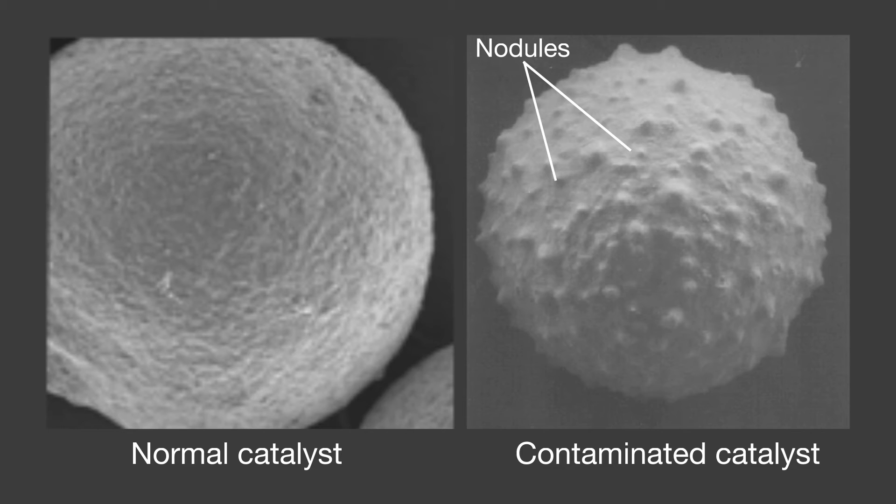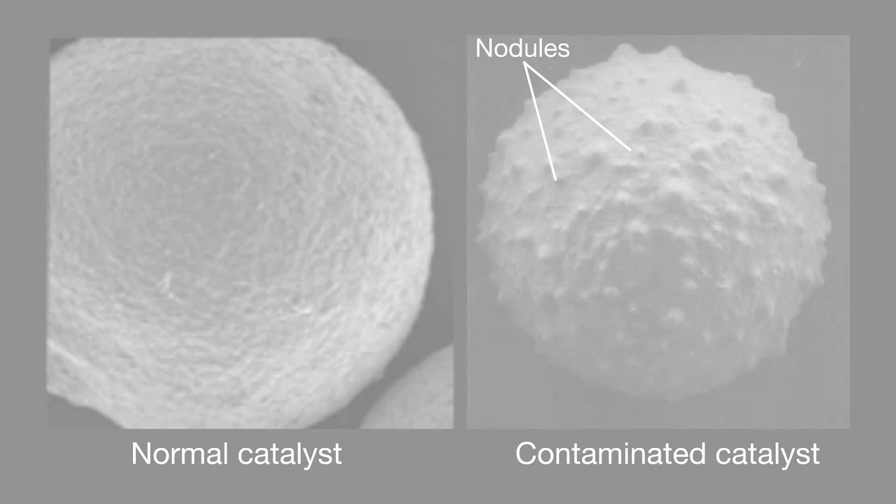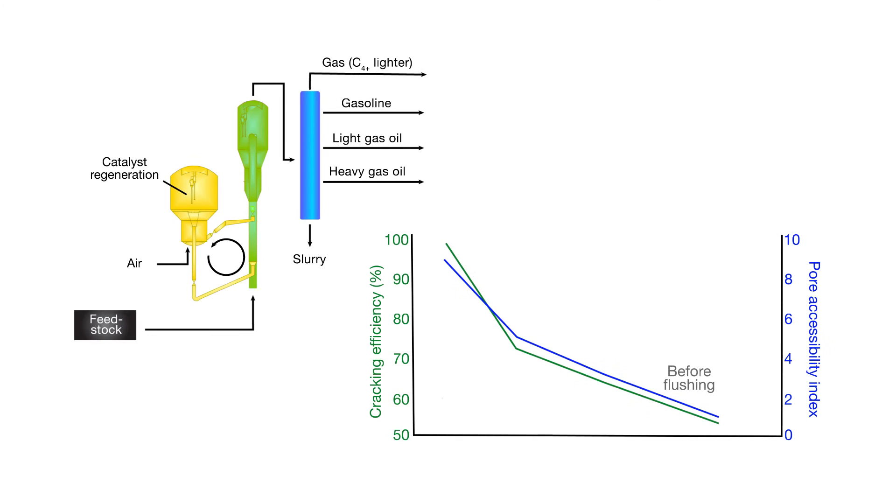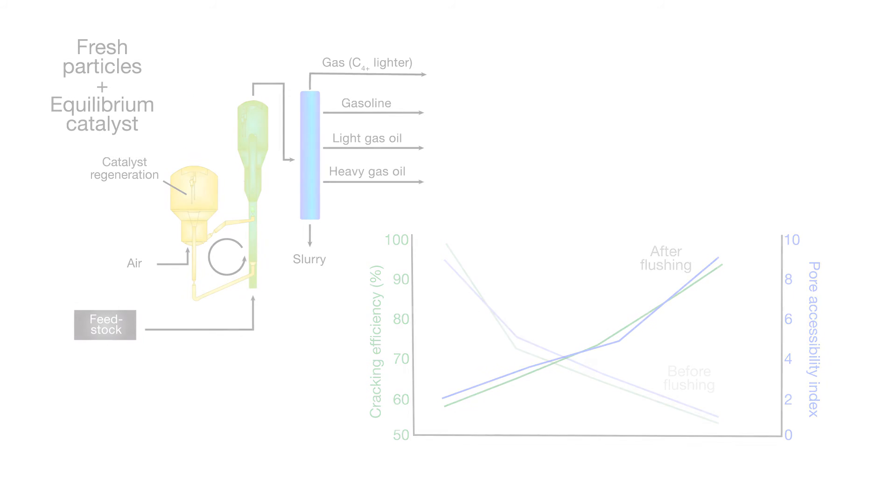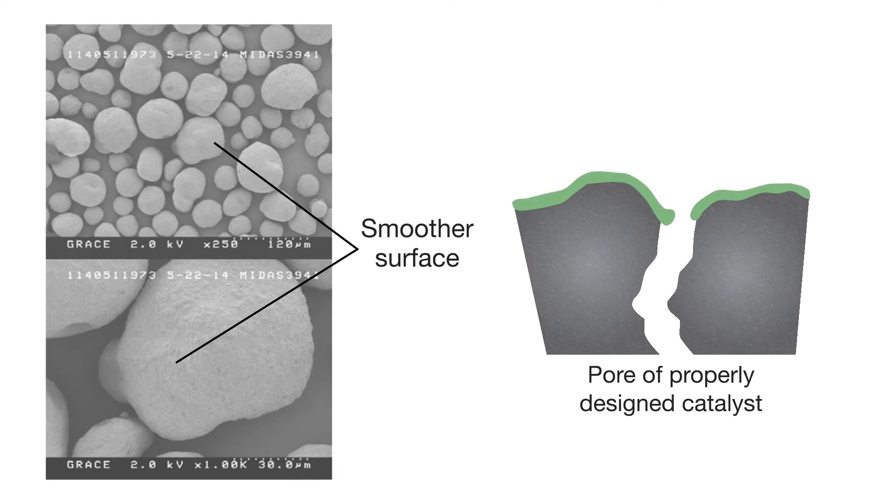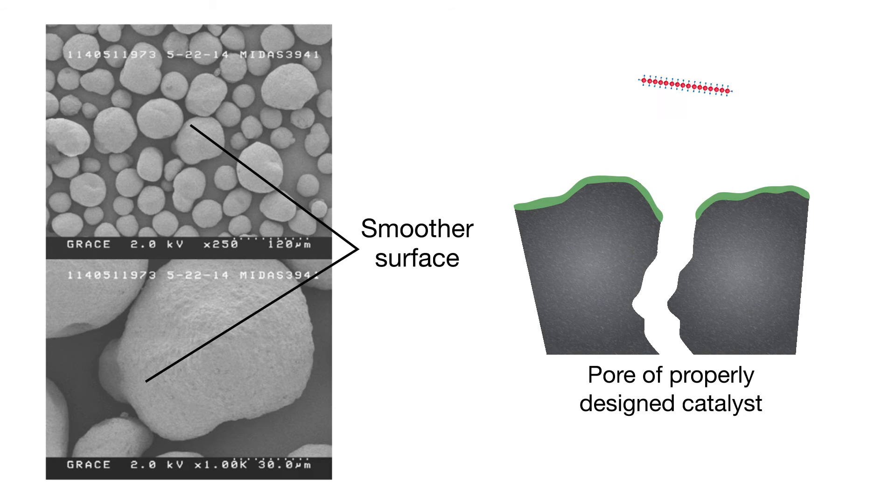These formations reduce the surface area available for cracking reactions, thereby cutting the total yield of refined product. Once these nodules have formed, refiners should flush the poisoned catalyst out of the FCC units, either with all fresh particles or a combination of fresh particles and equilibrium catalyst. Nodule formation can also be minimized by incorporating a properly designed FCC catalyst.